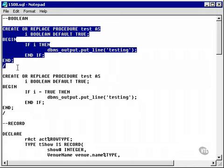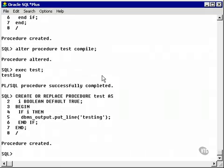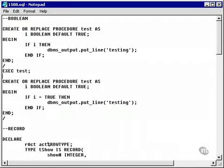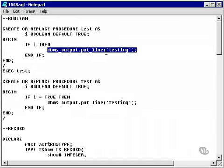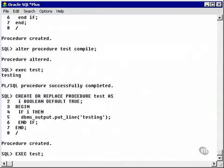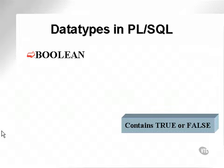Here we have a procedure, which I'm going to copy into SQL plus and compile. Then I'm going to execute it. I've set the default value of this Boolean variable to true, which means that as soon as it's created or accessed, it gets a value true. Therefore, when I execute this procedure, since it's true, in other words, if I evaluates to true, it will output this line and give me a result that says testing. So, I'll now exec or execute the test procedure and I get the result that says testing.